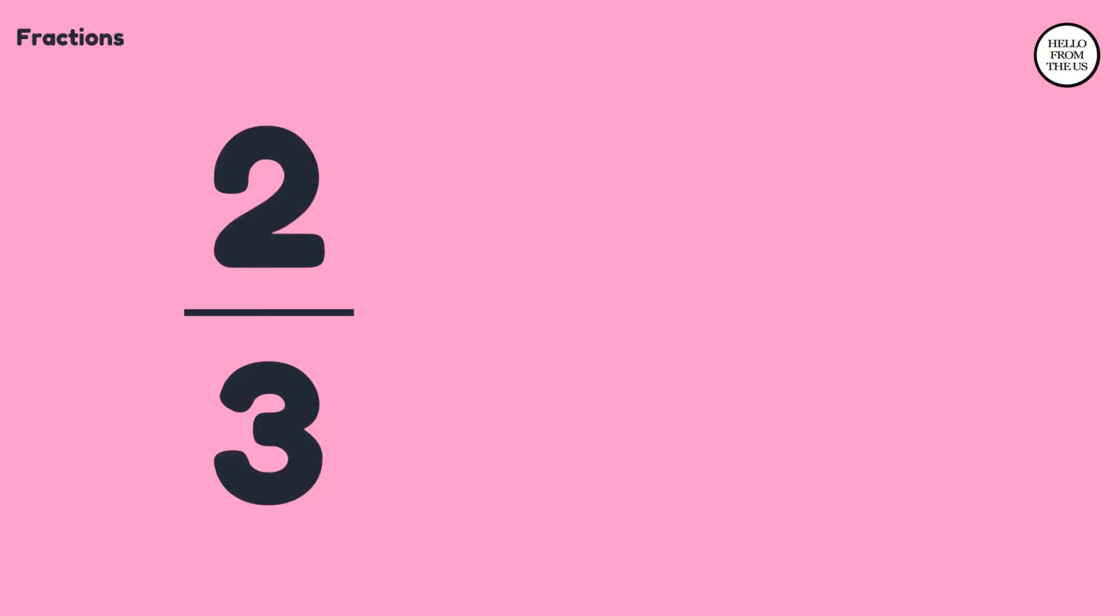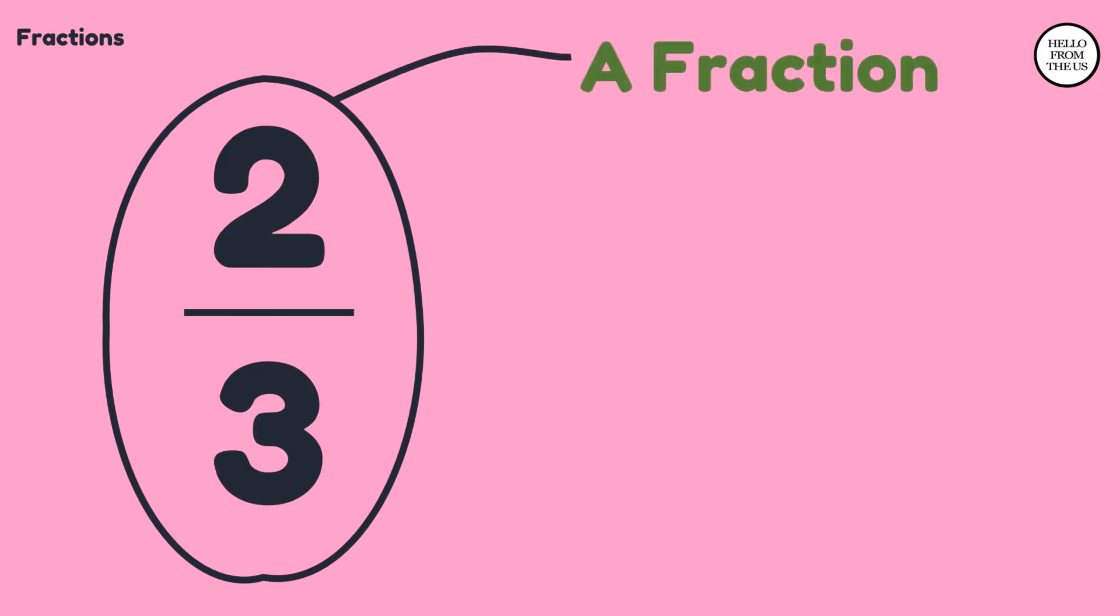What is the name of this math expression? A fraction. The number two is at the top and we call this the numerator. Below the line is number three and we call this the denominator.